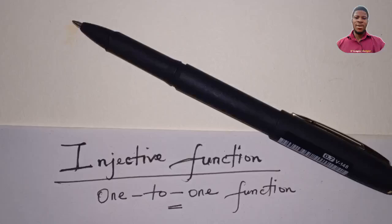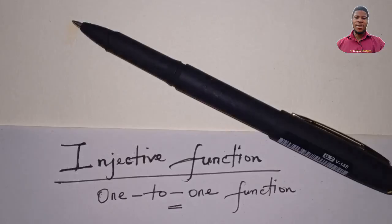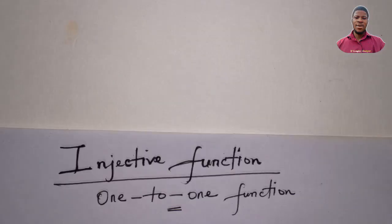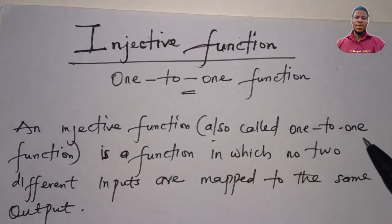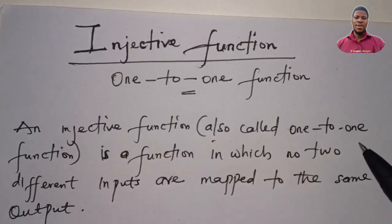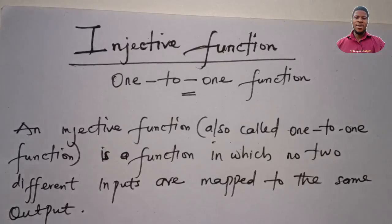In this video, we're going to talk about injective functions, or one-to-one functions. An injective function, also called a one-to-one function, is a function in which no two different inputs are mapped to the same output.